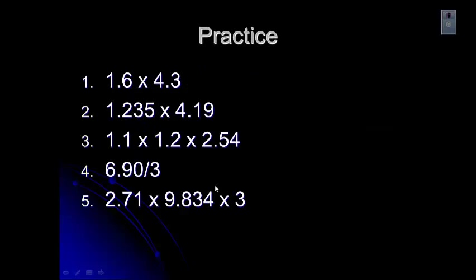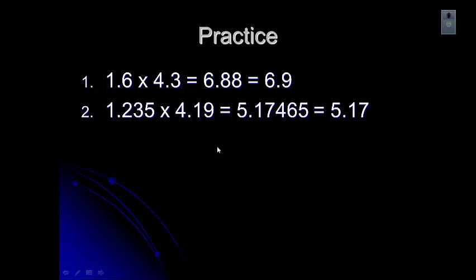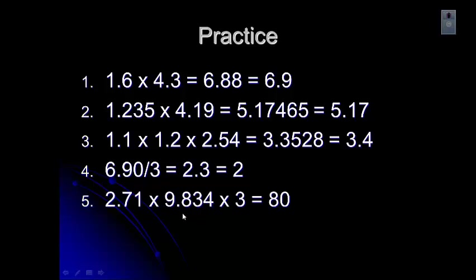Try these quick practice problems — pause the video, work them out, and try to give the answer with the correct number of sig figs. Note there are no units; these are just quick practice. For the first, I'll show the full calculator number, then the correctly rounded answer. With one problem, the 4 doesn't round the 7 up, so it stays the same. On another, remember the 3 in the denominator has only one sig fig, so you must round to one digit. On the last one, also one sig fig — so you would round to 80 to get the correct answer.